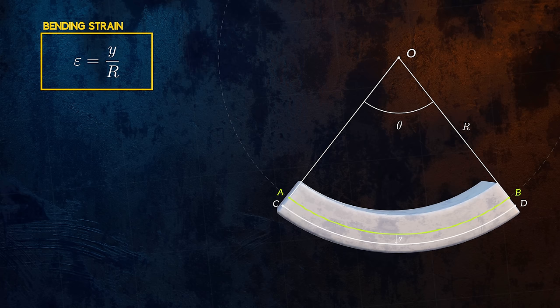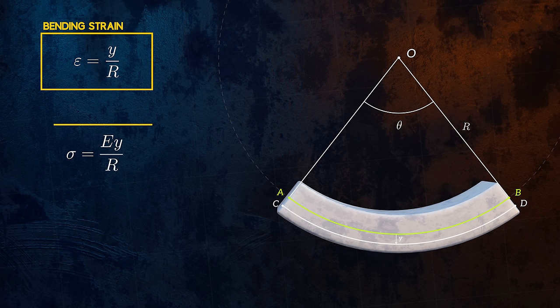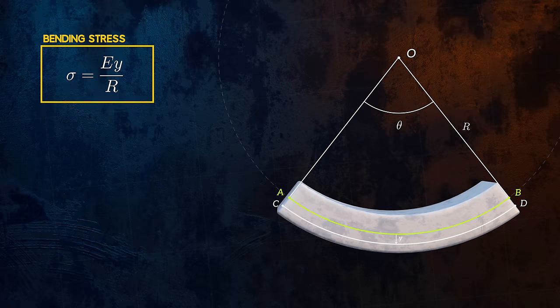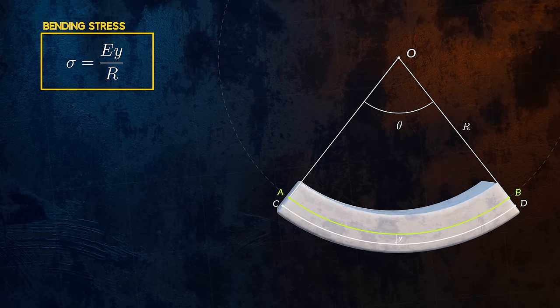If we assume that stresses remain within the elastic region of the stress-strain curve, we can then apply Hooke's Law for uniaxial stress to calculate the bending stresses. This gives us the equation for bending stress as a function of the radius of curvature, R, of the deformation. But what we're really interested in is how the bending moment M affects the bending stress.